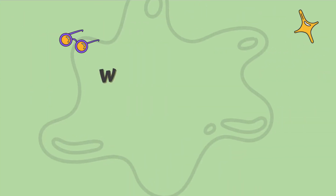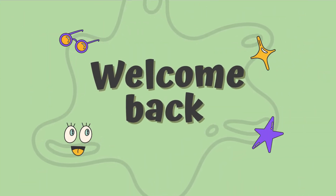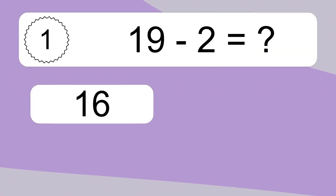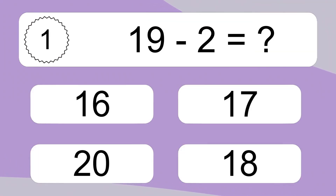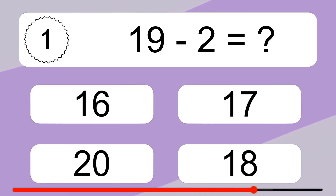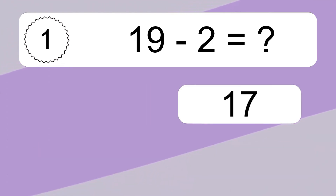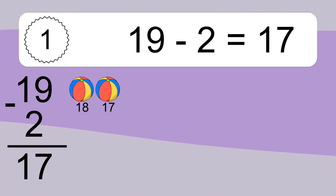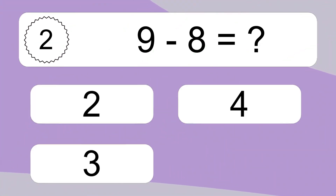Hey and welcome to a new video! Get ready to tackle fun challenges and test your skills. Let's get started. 19 minus 2 equals what? 19 minus 2 equals 17. Let's count it: 18, 17.